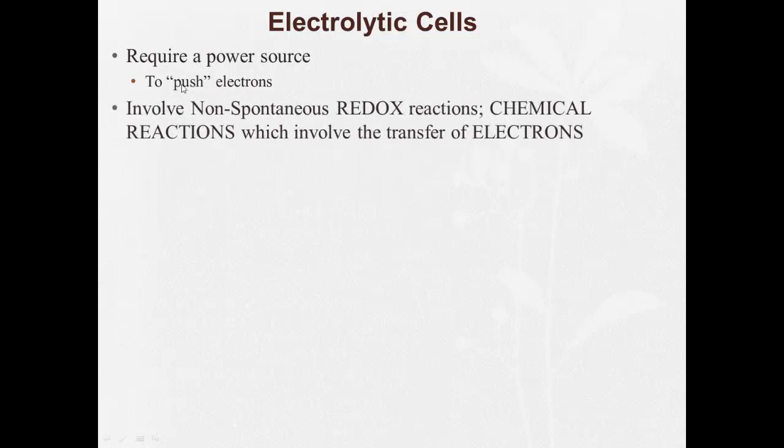Electrolytic cells are pretty much the opposite of galvanic cells in some ways, but not in others. The main way they're opposite is that where galvanic cells are batteries and power sources, electrolytic cells require a power source to push electrons and involve non-spontaneous redox reactions.